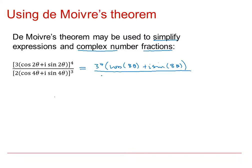So we've got 2 cubed cos 3 lots of 4 theta plus i sine 3 lots of 4 theta.